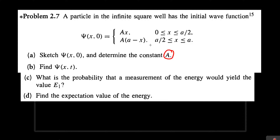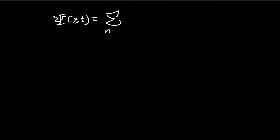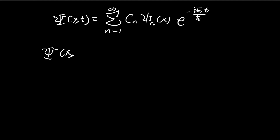In the previous question, we found the value of a, so now we want to find the wave function itself. The entire wave function is composed of an infinite sum — all the stationary states times the time component. Now we need to make sure that our wave function satisfies the initial condition, so when t is equal to 0, this wave function is going to look something like this.